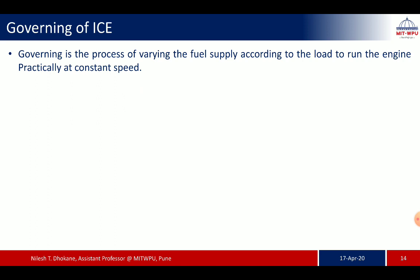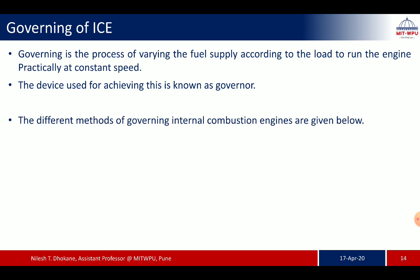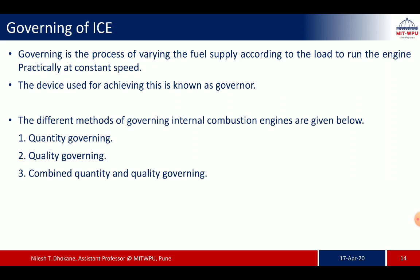Governing is the process of varying the fuel supply according to the load in order to run the engine at a practically constant speed. The device used for achieving this is known as the governor. The methods of governing for internal combustion engines are: quantity governing, quality governing, combined quantity and quality governing, and hit-and-miss governing.